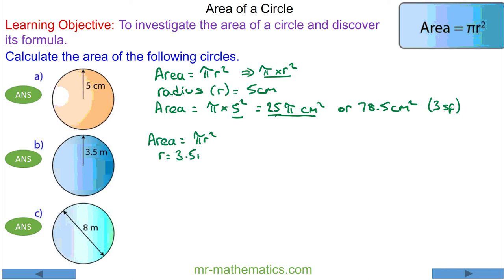The area is π times 3.5 squared. 3.5 squared as a fraction is 49 over 4, so that is 49/4 π meters squared as a multiple of π.